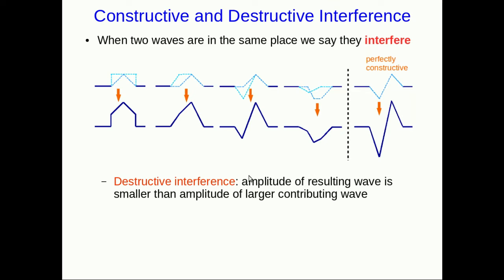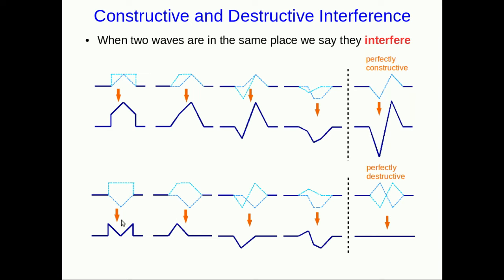Destructive interference is the opposite. When the amplitude of the resulting wave is smaller, technically it's when it's smaller than the larger contributing wave. So this is when you have some subtraction going on, like the crest meeting the trough, or any of these examples. This one's a bit mixed. There's a little bit of constructive interference going on in the middle of it here, but the rest of it is destructive. And again, when the two waves are exactly the same shape and size but flipped relative to each other so that they add together and end up totally cancelling each other, we call that perfectly destructive interference.